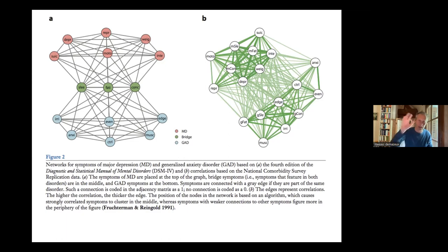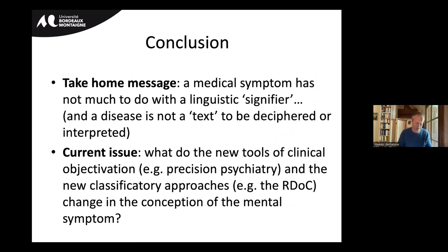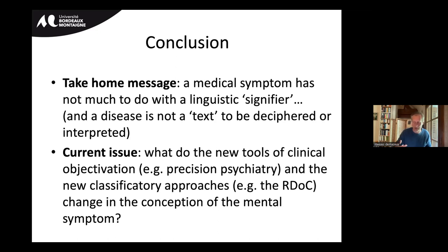To conclude, the network model is very interesting and supported by different studies, but it has an important weakness: it does not address the precise form of what a mental symptom is — symptoms are just nodes, bubbles you can put anything into, as long as there is a statistical correlation. This can be useful for practical reasons but brings many conceptual difficulties. The take-home message: a medical symptom has not much to do with the linguistic signifier, and disease is not a text to be deciphered or interpreted. The big important issue, as a historian and philosopher of psychiatry, is to highlight that the causal relationship between symptom and mental disorder has always been a tremendous issue for both classical and contemporary psychiatrists.